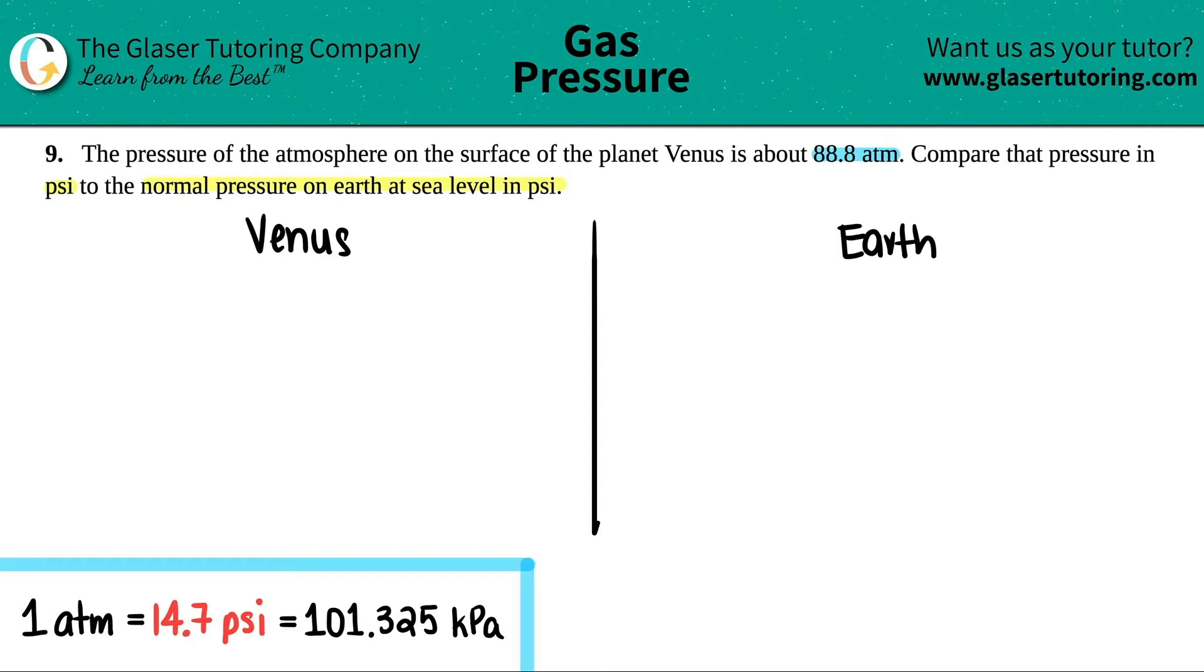So they told us that the atmospheric pressure on the surface of Venus is 88.8 atmospheres. And they want us to compare that pressure in PSI. So I need to convert one unit of pressure to another unit of pressure. PSI is basically the same thing as saying pounds, which is LBS per square inch. Basically it would be pounds per inches squared. We just need to convert it from ATM to PSI.